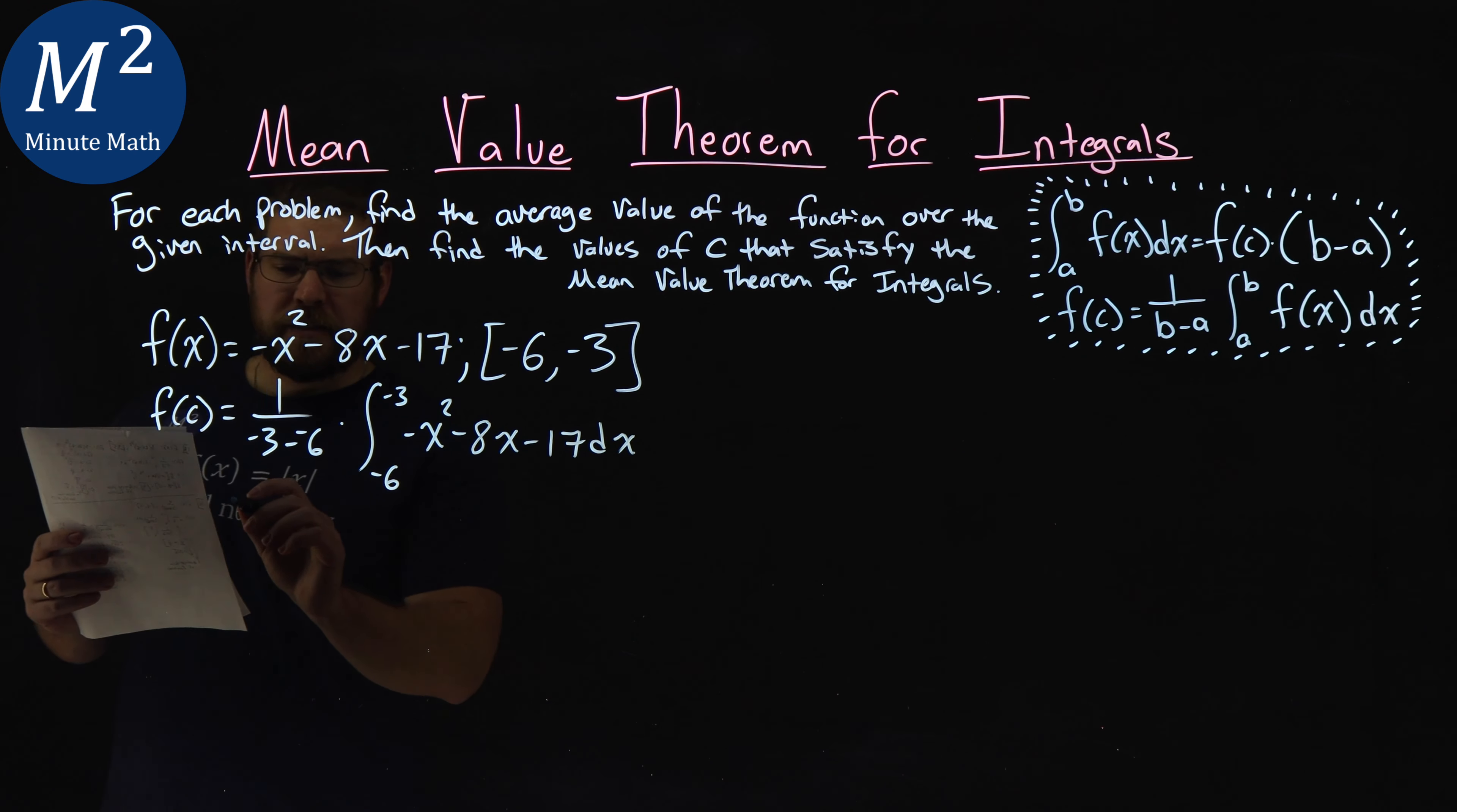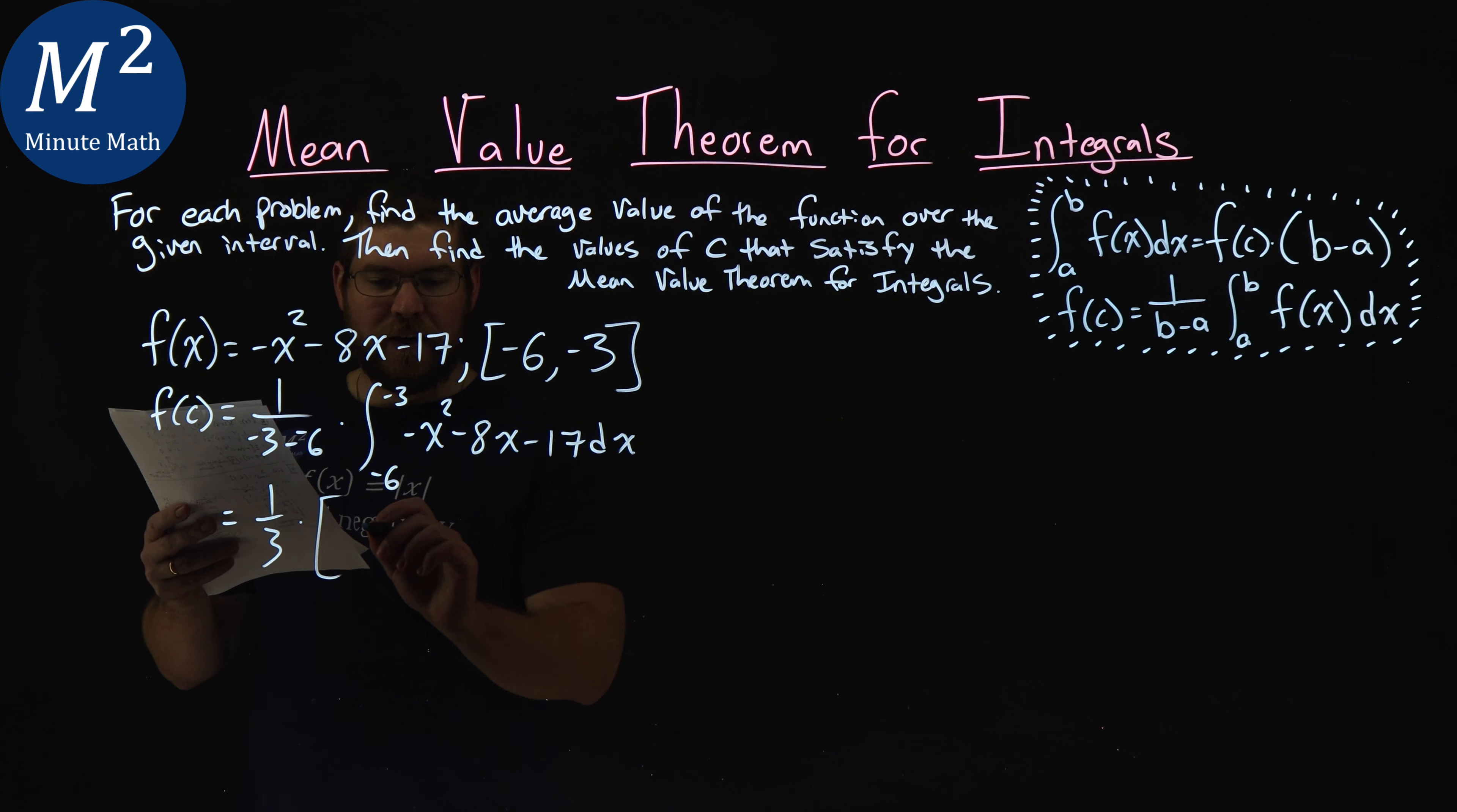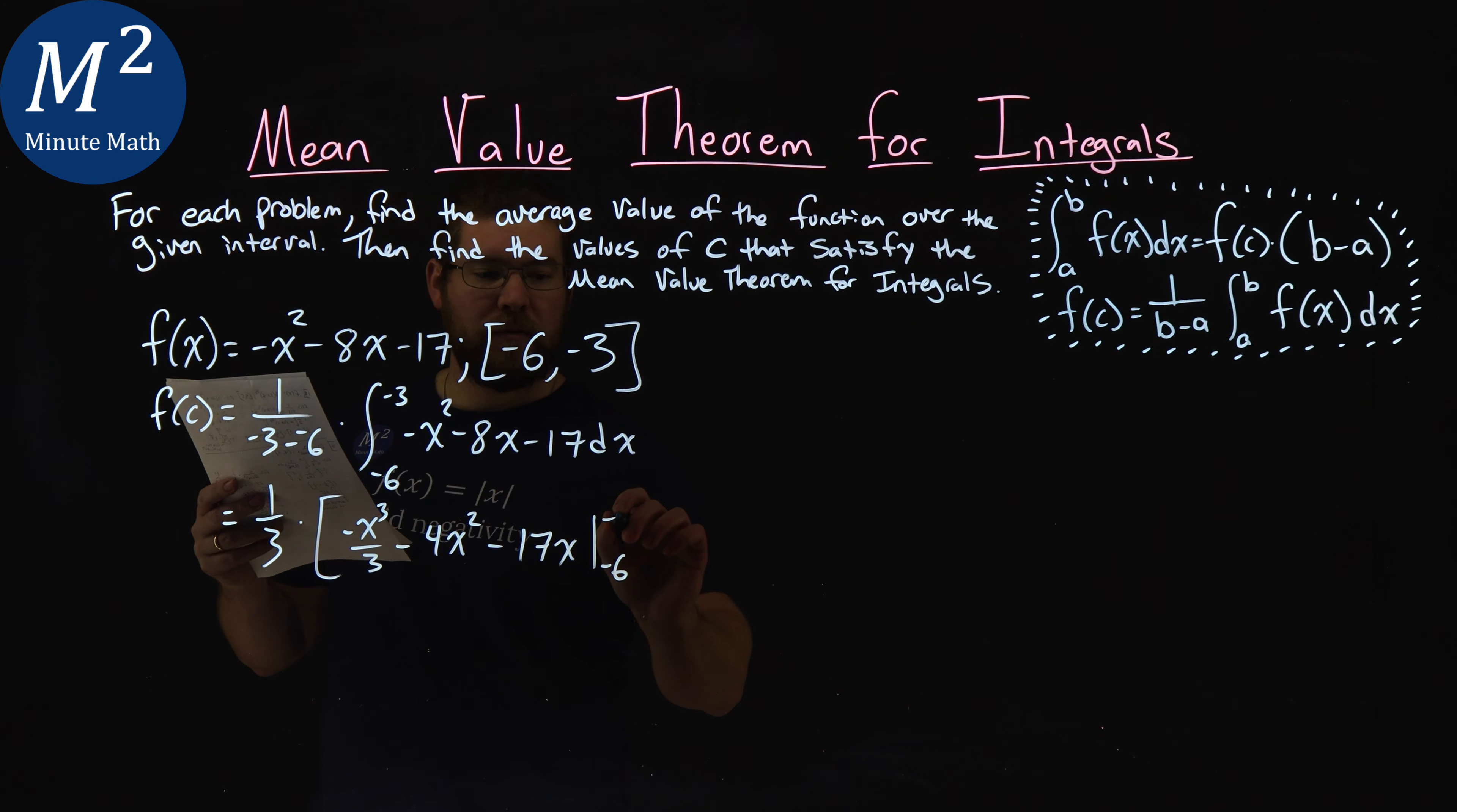Well, this is actually pretty simple once we have it set up. 1 over negative 3 minus negative 6 is positive 3, so we have 1 third here. Multiply that by the integral of our function. Negative x squared is negative x to the third over 3, minus 8x integrates to 4x squared, and negative 17 is just negative 17x. And we're integrating this from negative 6 to negative 3.